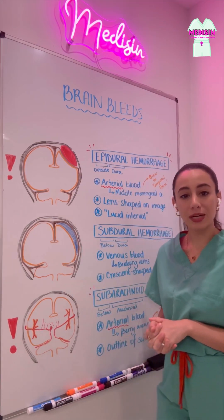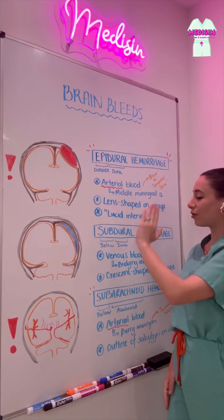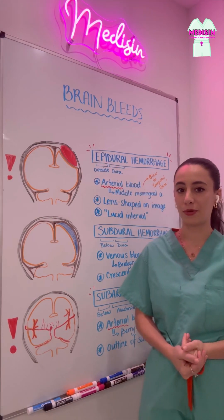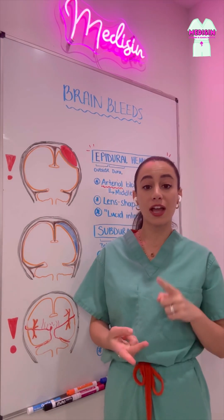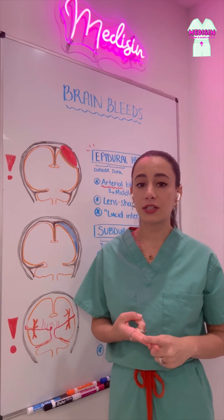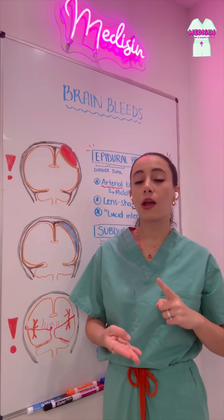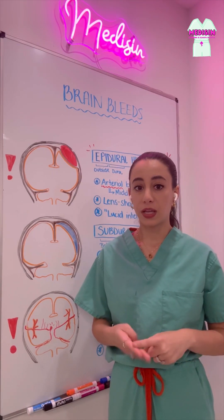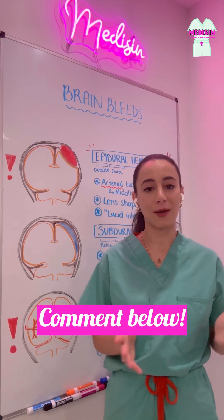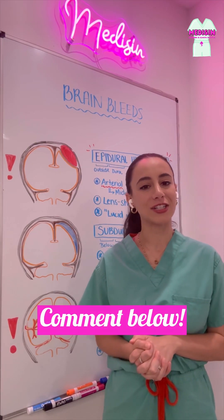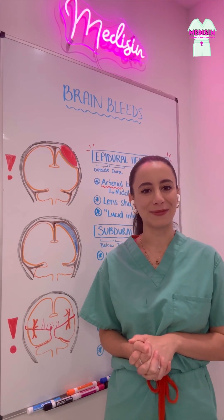So these are three different types of bleeds: epidural hemorrhage, subdural hemorrhage, and subarachnoid hemorrhage. We've learned about how they occur, the symptoms associated with them, what we see on imaging, and what we might do. If you want to learn anything else, drop a comment below — we're happy to answer any questions you might have. My name is Alyssa and this is medicine.